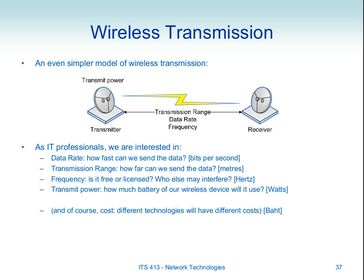Our device transmits with some power. When we talk about mobile devices, the transmit power is important because the more transmit power we use, the more energy the wireless transmitter consumes of your battery. The higher the transmit power, the further we can transmit — that's a good thing. But the higher the transmit power, the more energy we need to consume for the device — the faster your battery will go flat on your mobile device. So we want high transmit power for high range, but low transmit power to preserve battery life.